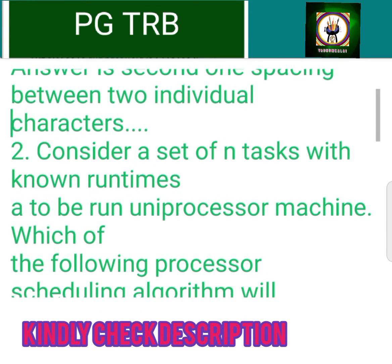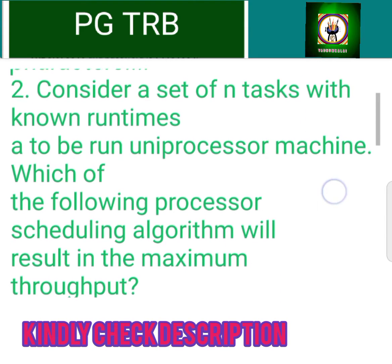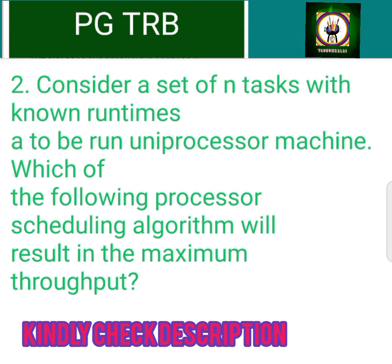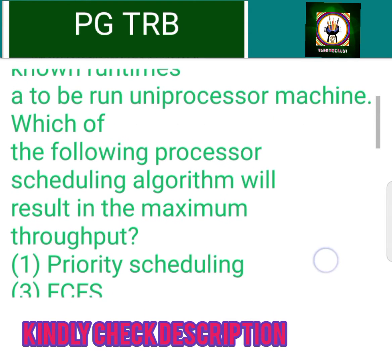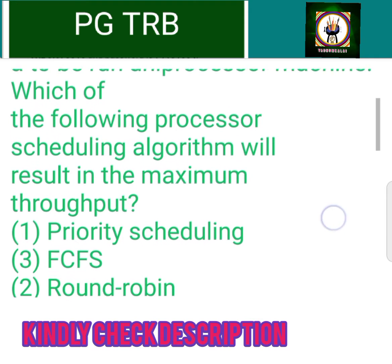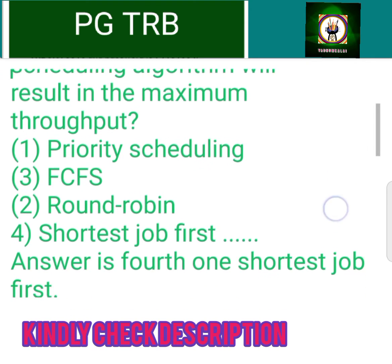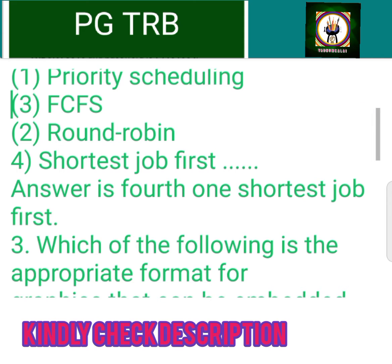Consider a set of N tasks with known runtimes to be run on a uniprocessor machine. Which of the following processor scheduling algorithms will result in the maximum throughput? 1. Priority scheduling, 2. Round Robin, 3. FCFS, 4. Shortest Job First. Answer is 4th: Shortest Job First.